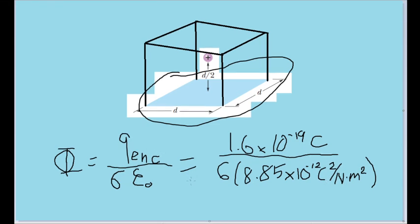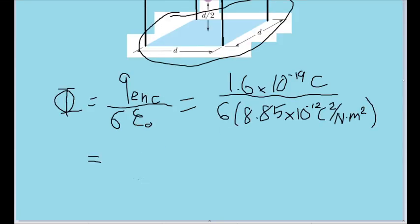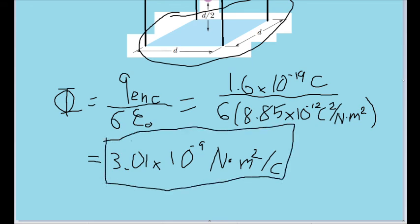Now all that's left is to plug this into a calculator, and we find that our final answer is 3.01 times 10 to the negative 9th of newton meters squared per coulomb. And that is the actual amount of electric flux passing through the square here.